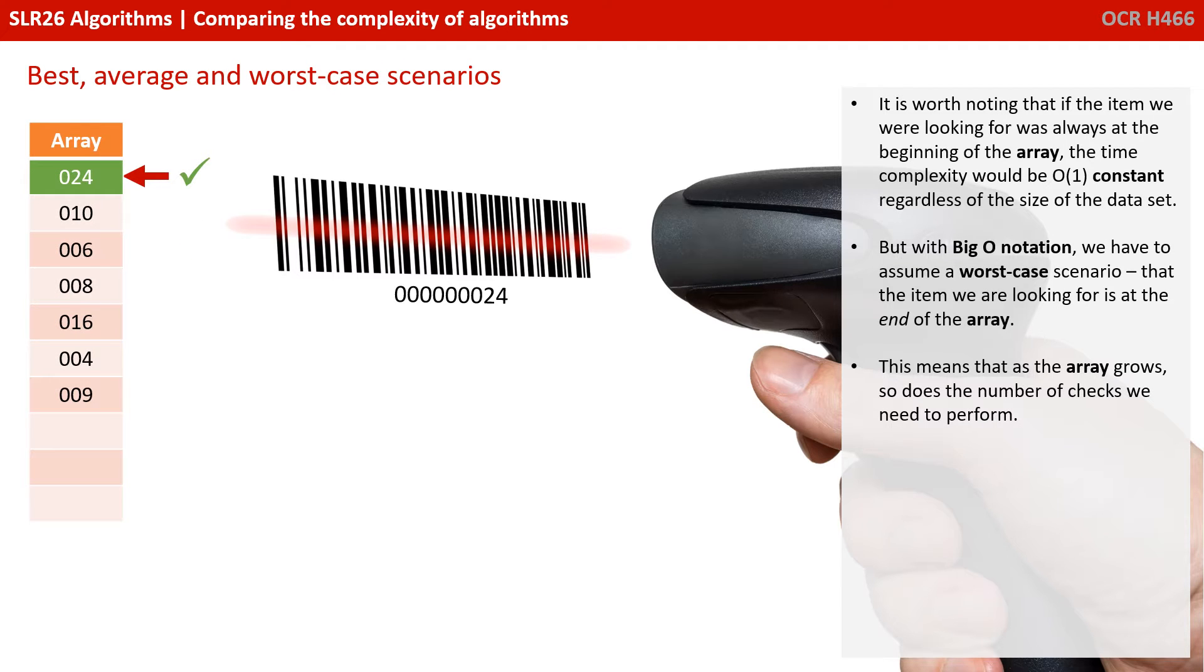It's worth noting that if the item we're looking for was always at the beginning of the array, the time complexity would be O(1) or constant regardless of the size of the data set. But with big O notation we have to assume a worst case scenario that the item we're looking for is at the end of the array. This means that as the array grows, so does the number of checks we need to perform.